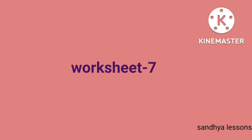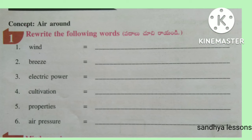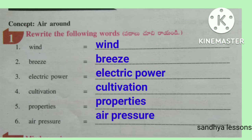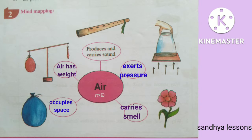Worksheet 7. First, rewrite the following words: Wind, Breeze, Electric Power, Cultivation, Properties, Air Pressure. Second, mind map for Air: Air exerts pressure, carries smell, air occupies space, air has weight.